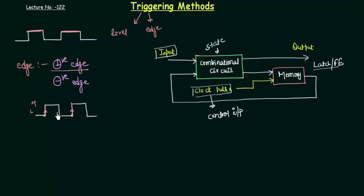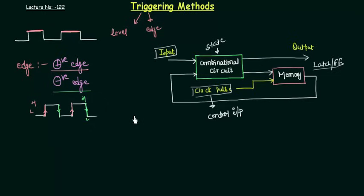In case of negative edge triggering, when the clock is at high and goes to low, there will be a transition in the memory element. Similarly, when it goes from high to low again, there will be a transition. These are the triggering methods available to us, and it's important to understand this before we proceed to flip-flops as it sometimes creates confusion. In the next presentation we are going to find out what is the difference between the latch and the flip-flop.